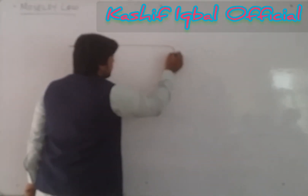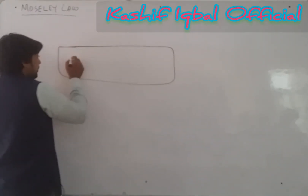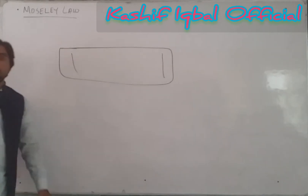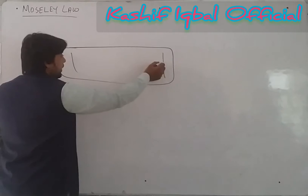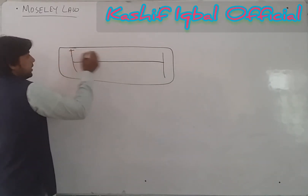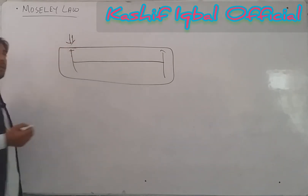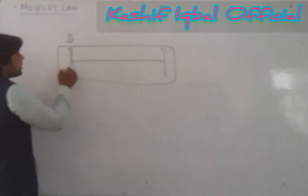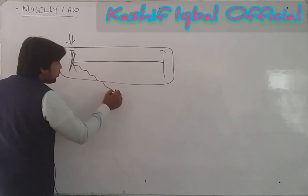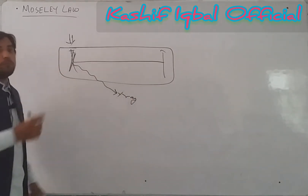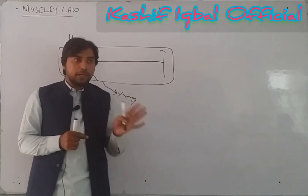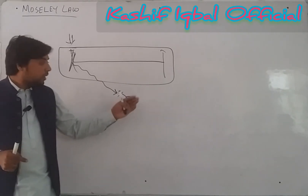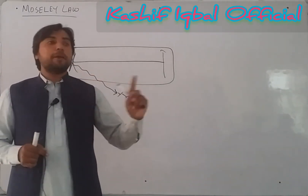X-rays are produced in the discharge tube — the Röntgen method which we have learned before. Moseley used different metals as the anode in the discharge tube, and the X-rays produced formed a spectrum of the anode material.